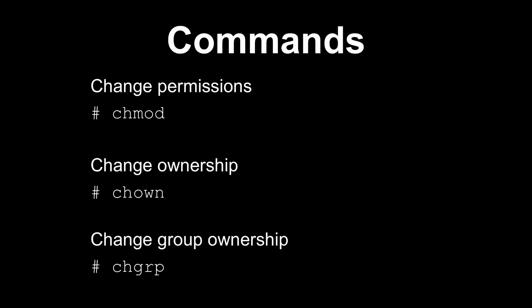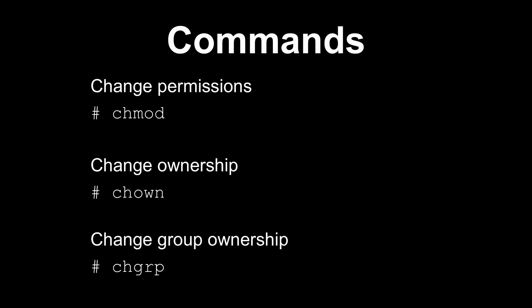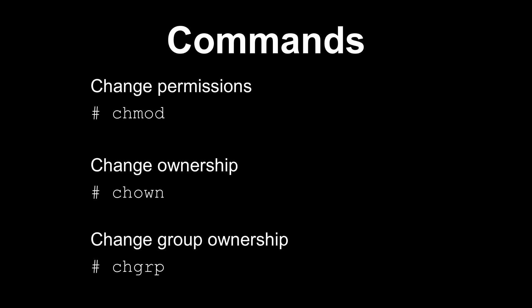Let's talk about the commands that make this possible. If you want to change permissions for a file, use the chmod command. Note that I'm using a slightly different prompt here indicating root privileges, but you can actually change permissions on any files that you own. chown and chgrp are the commands to change the ownership and group ownership of a file — usually you will need elevated privileges or to be root to do that. When we move to the command line examples, we will mostly use the chmod command.